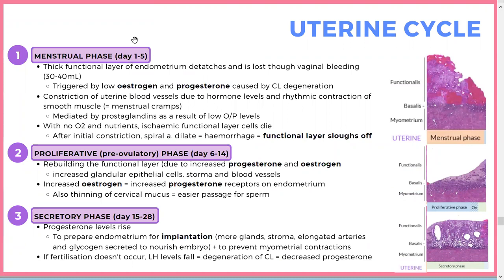In more detail: the menstrual phase is from day one to five. The thick functional layer detaches and is lost through vaginal bleeding, triggered by low estrogen and progesterone. Constriction of uterine blood vessels and smooth muscle contraction causes menstrual cramps, mediated by prostaglandins. Without estrogen and progesterone, there is ischemia of the functional layer, causing it to slough off.